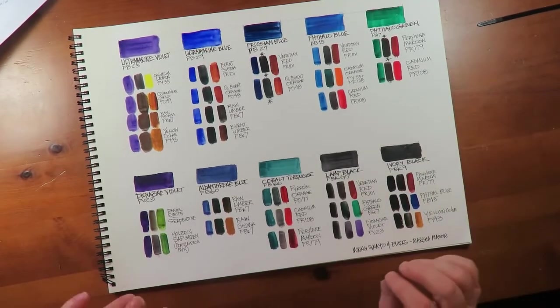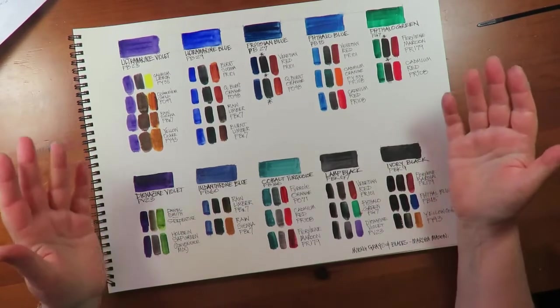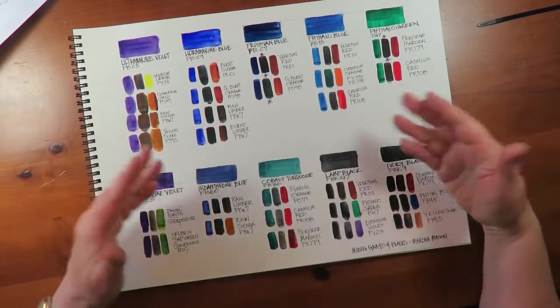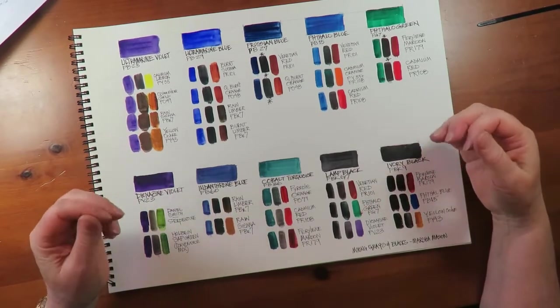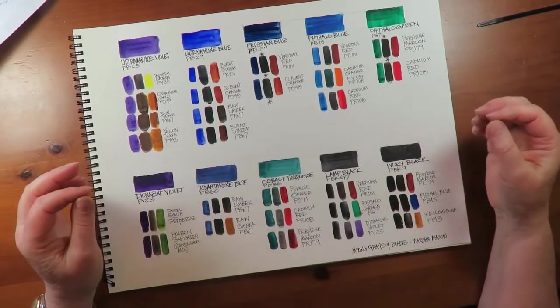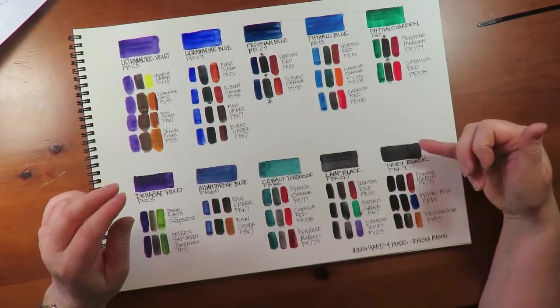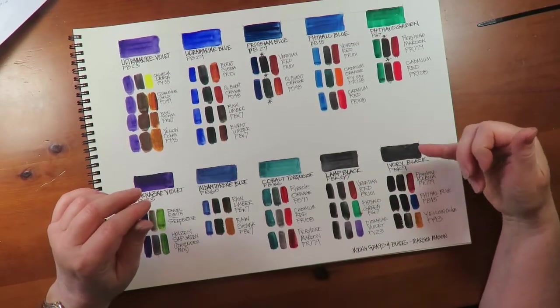Now, if you decide that you really have to use black out of the tube, the lamp black or ivory black I have here, here's why it's risky. When you use a black like this out of the tube straight, it's quite opaque.